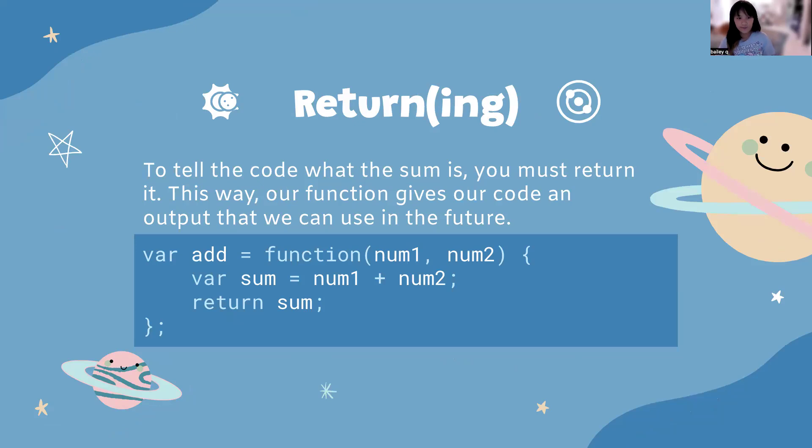This way, our function gives our code an output we can use in the future. For example, we can use a text function to actually output the sum onto the screen. Without the return part, we would not actually output anything because the code has not been executed.